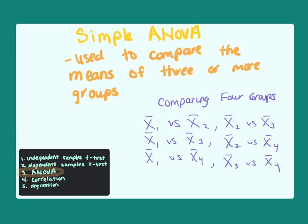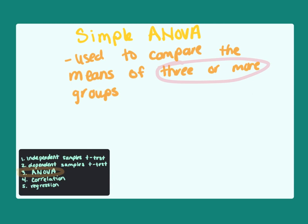This gets even more cumbersome with more than three groups. For instance, with four groups, comparing each group to every other would require six different t-tests, each with a 5% chance of a type one error — adding up to an astounding 30% chance of a type one error. The ANOVA instead rolls all these tests into one big test as our starting point. Therefore, when we have three or more groups, the best choice is to use an ANOVA.